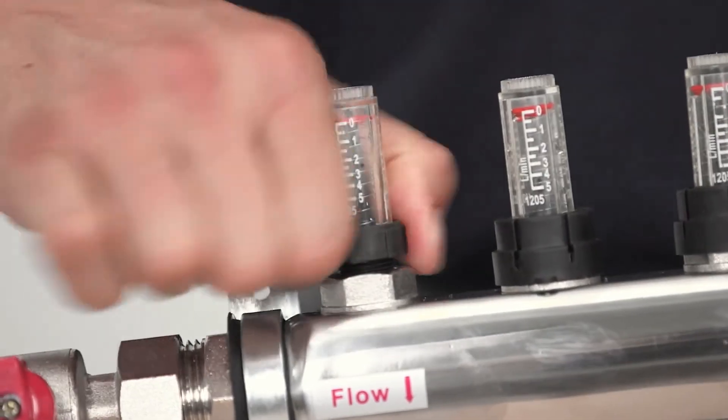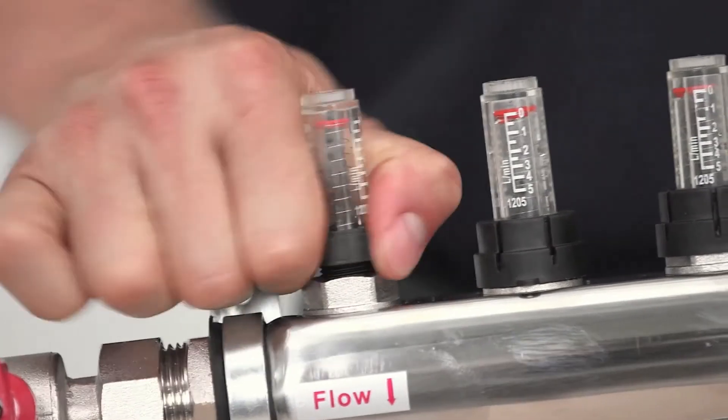Setting the flow is achieved by lifting the locking ring at the base of the flow meter and turning the adjusting nut.